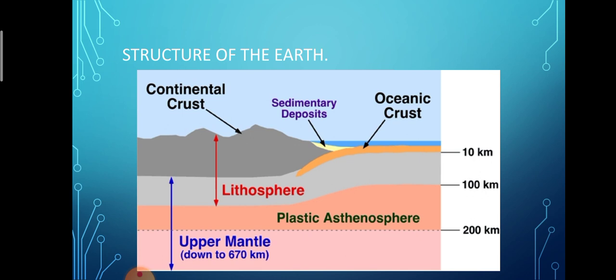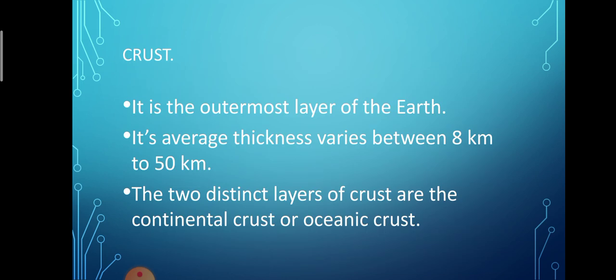The lower crust or sima is a continuous layer forming an extremely thin ocean floor. It may range from a few meters to 10 km in thickness. The main minerals of this layer are silica and magnesium. So this is all about the crust.